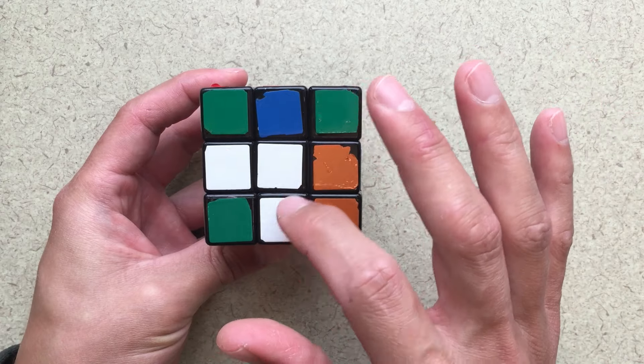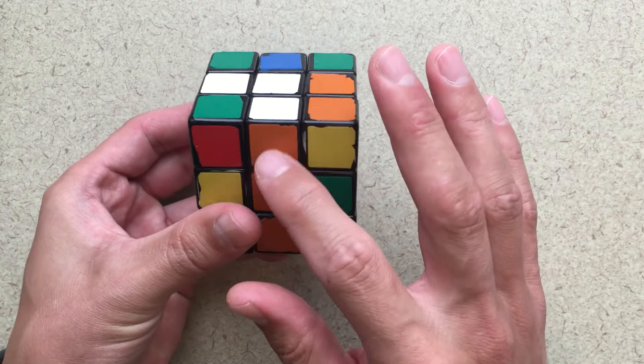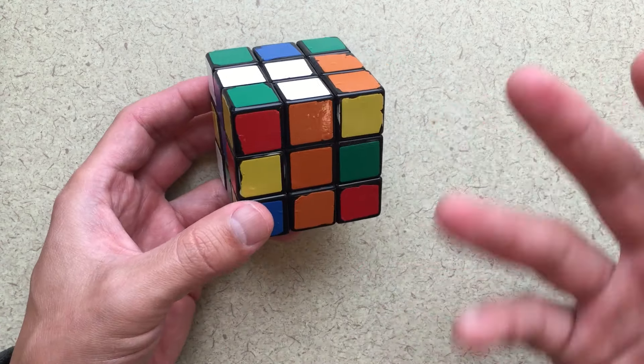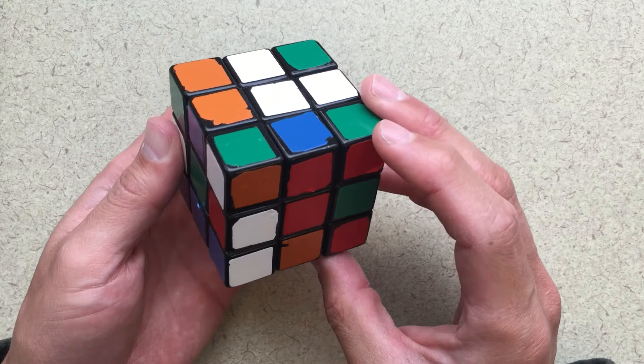So again, I want to make a cross here with the white up and then make sure that these pieces are in the correct orientations. If they're not, then we need to start over and make sure that we end up with them in the correct orientation.